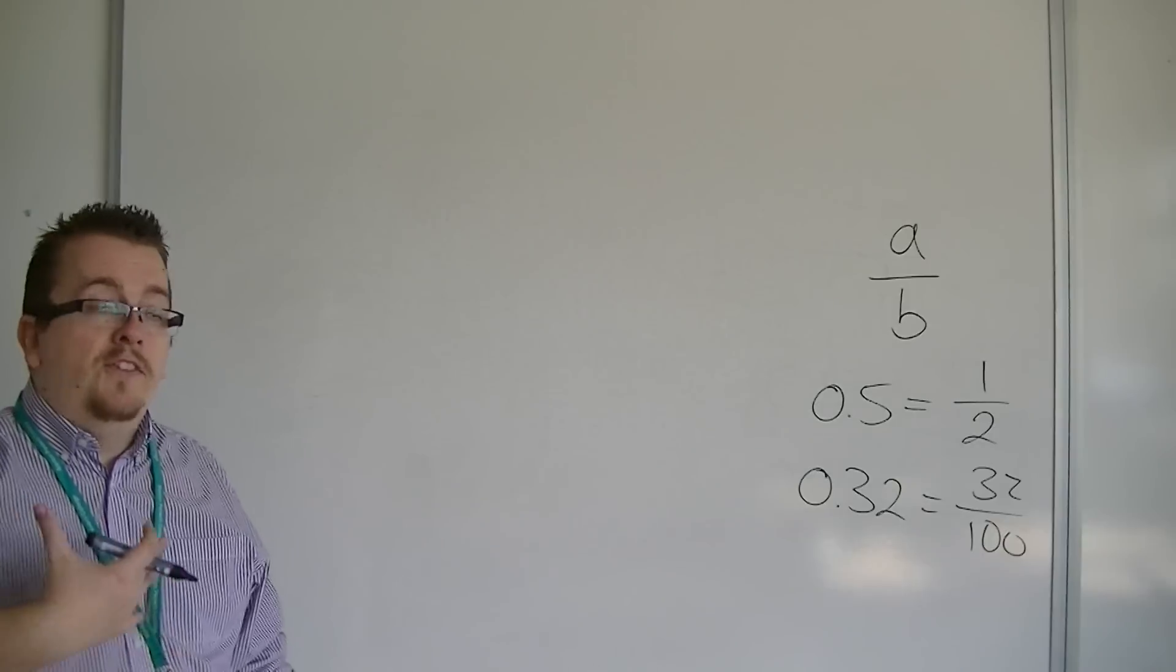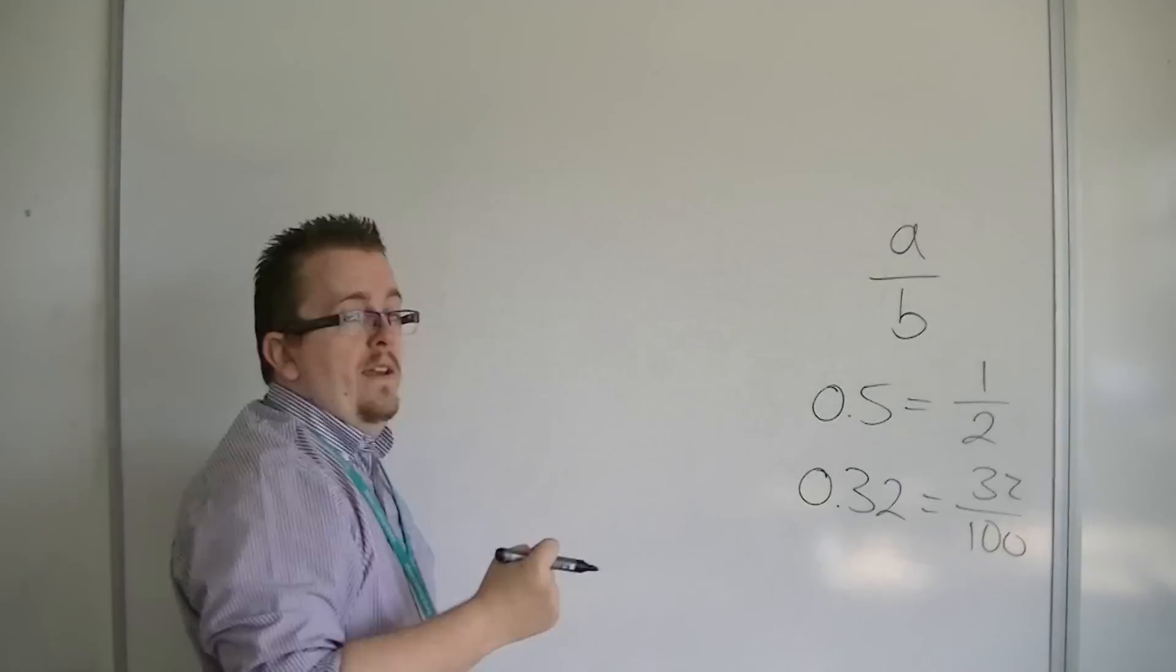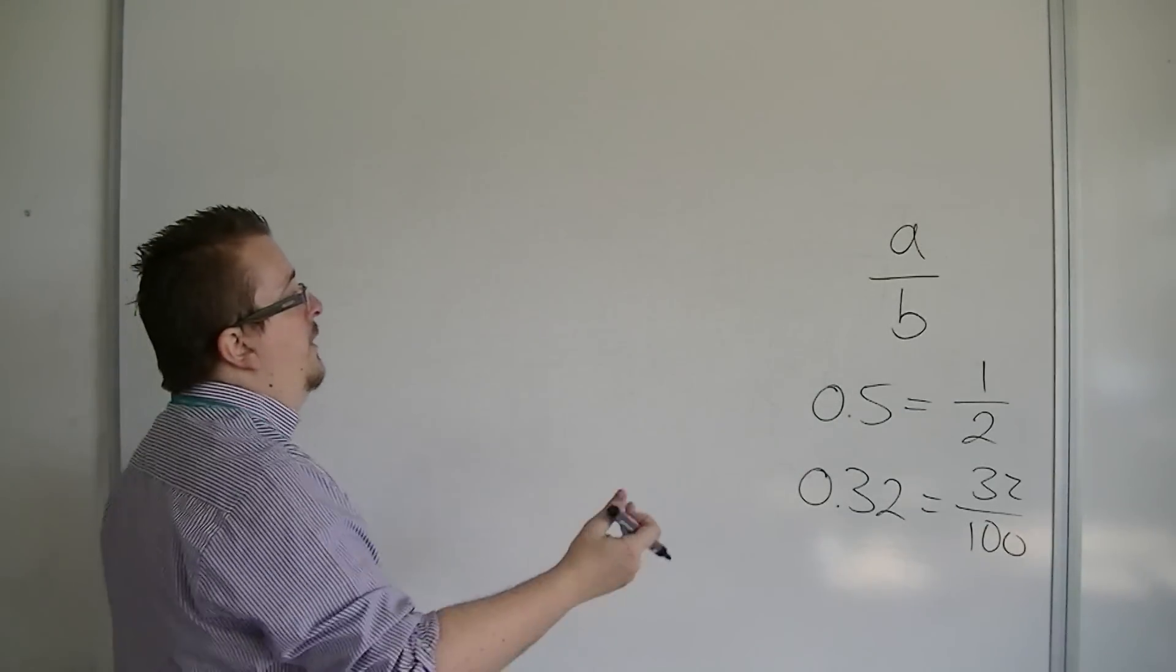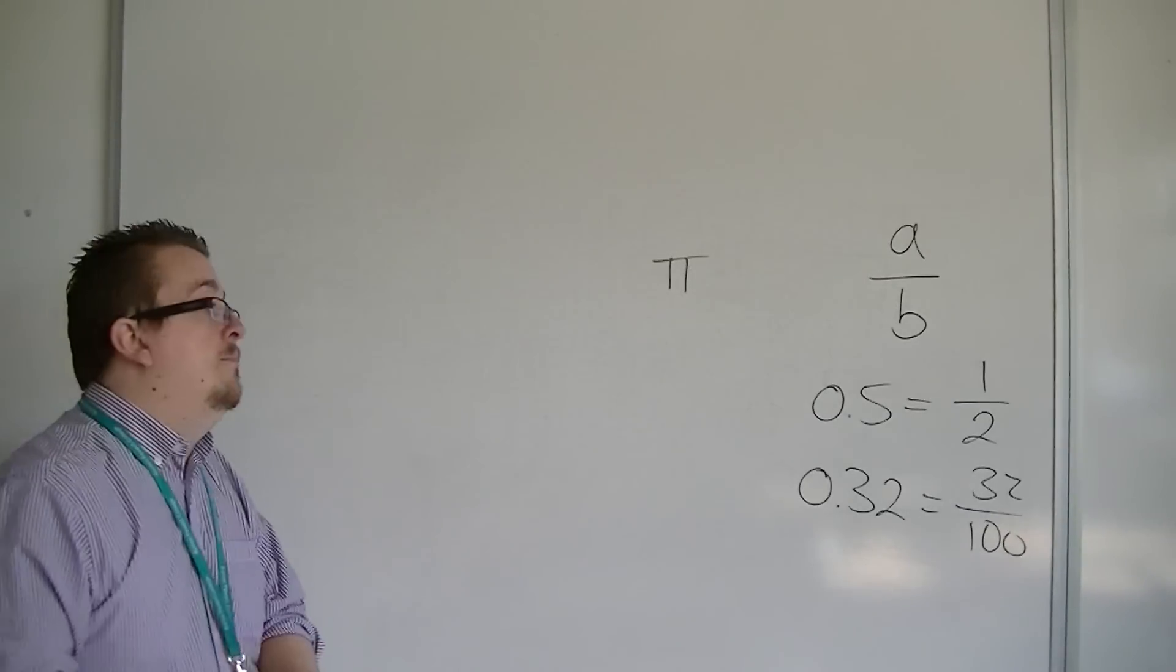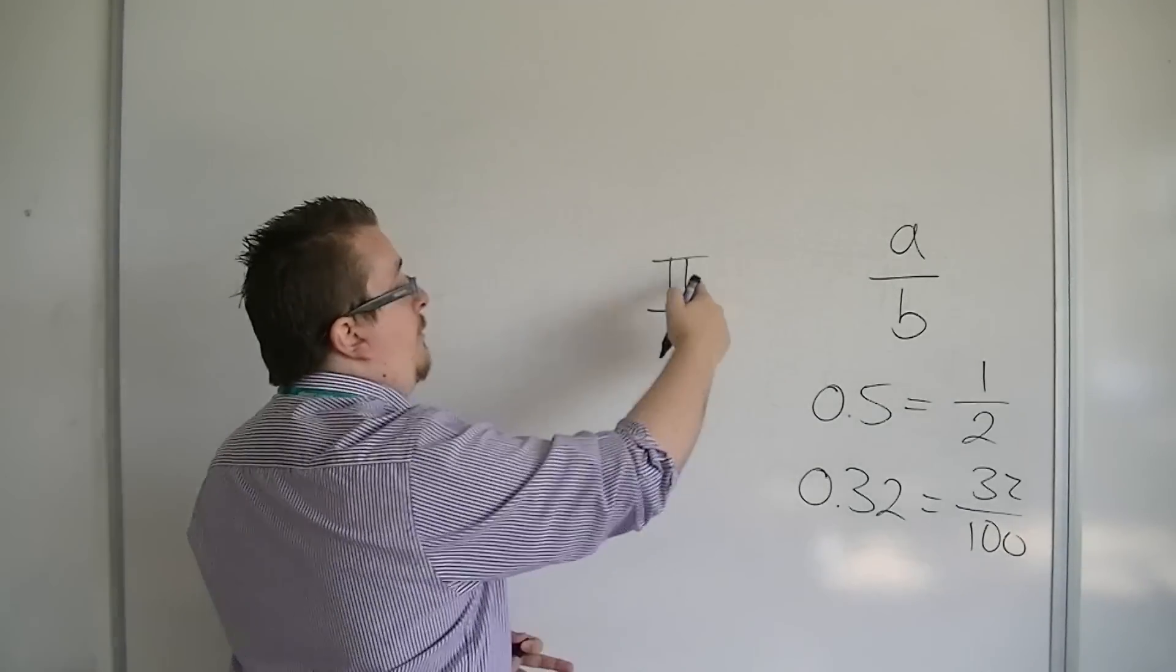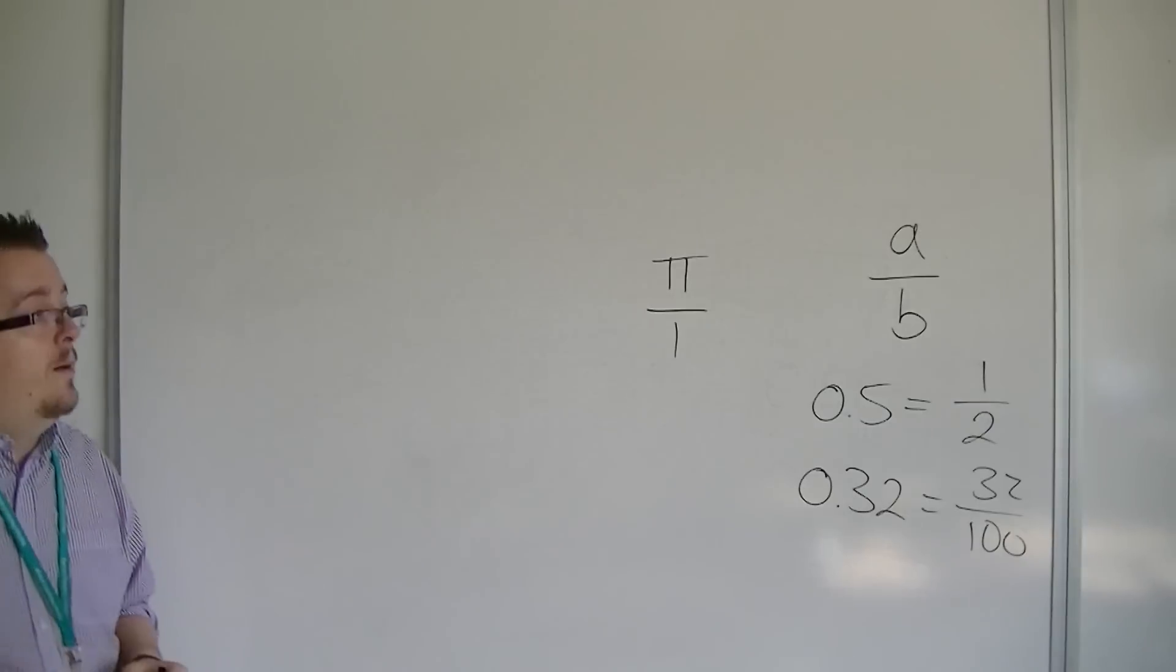An irrational number is a number that cannot be written in this way. So a number like pi, for example. And you can't get around it by writing pi over 1, because pi itself is not a whole number, even though 1 is.